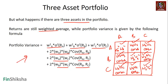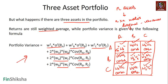A variance-covariance matrix is this n×n matrix. If there are n assets in the portfolio, you will have an n×n matrix where all the diagonals represent the variances and all the other terms symmetrically will be paired — giving you 2·wA·wB·cov(A,B) and so on. That's basically a three-asset portfolio. In the next section we're going to put up a small case and understand how to use this discussion to come up with an interesting portfolio. Thank you.